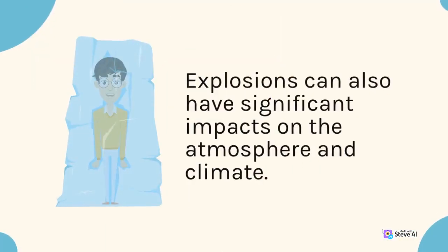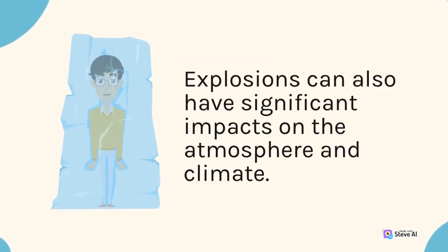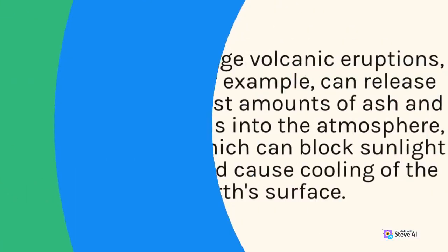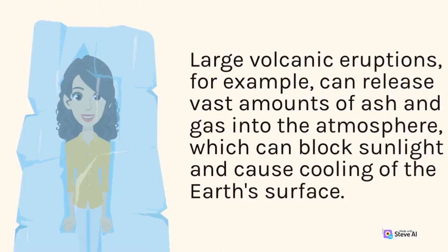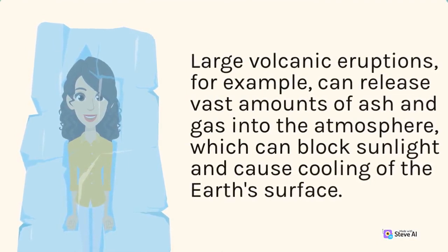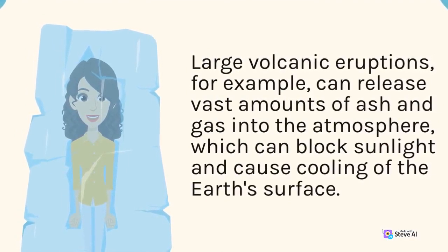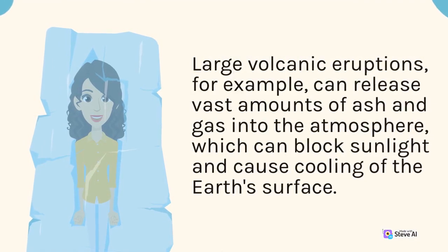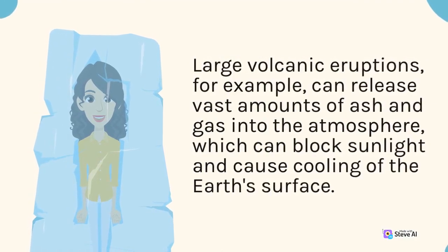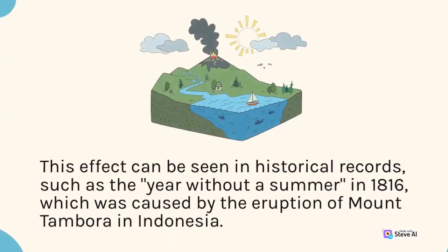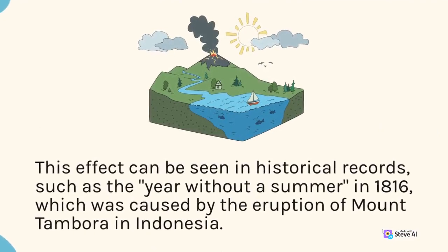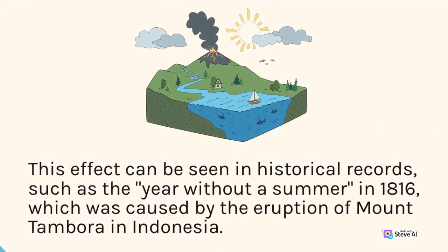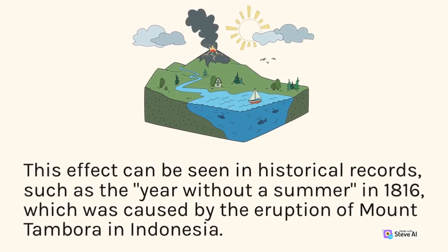Explosions can also have significant impacts on the atmosphere and climate. Large volcanic eruptions, for example, can release vast amounts of ash and gas into the atmosphere, which can block sunlight and cause cooling of the Earth's surface. This effect can be seen in historical records, such as the year without a summer in 1816, which was caused by the eruption of Mount Tambora in Indonesia.